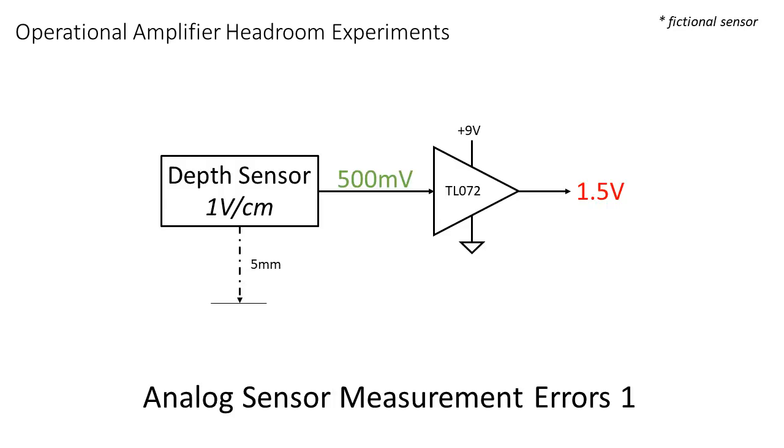The same problem occurs with sensors with an analog voltage as output. If the output voltage of the sensor is outside of the voltage range of the op-amp, you will have big measurement errors.